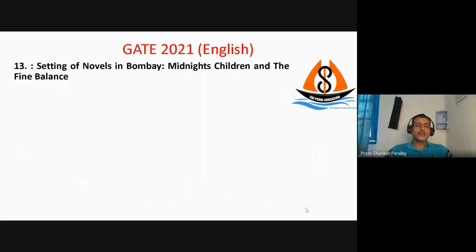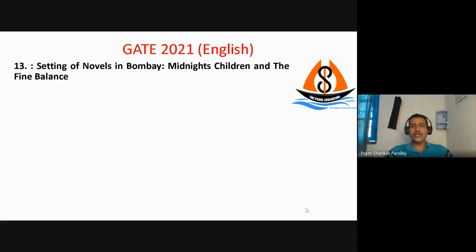Question 13 was about the setting of novels in Bombay. They gave different novels and the two set in Bombay were Midnight's Children by Salman Rushdie and A Fine Balance by Rohinton Mistry.